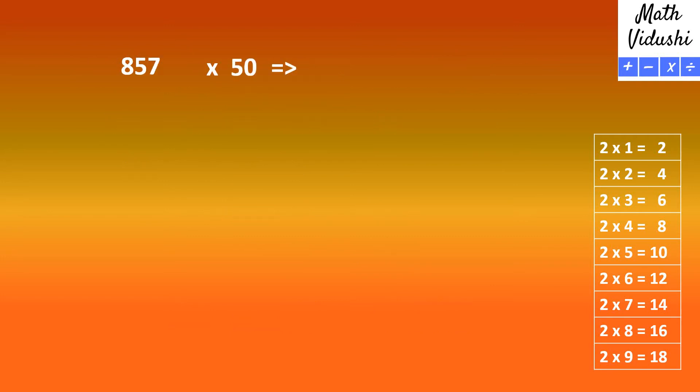Let's try more examples. 857 multiplied by 50. First, multiply it by 100, which means you just add two zeros.